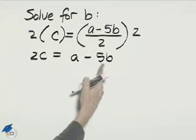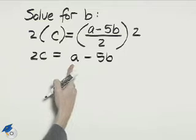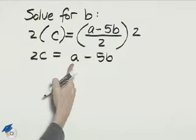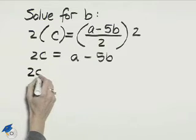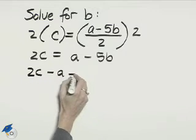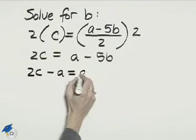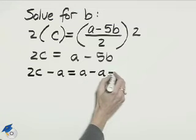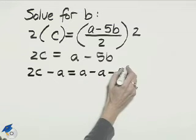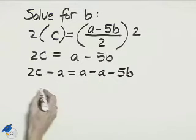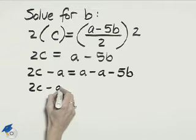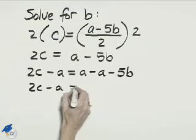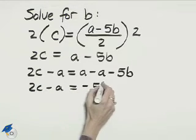If we're solving for b, we need to first move the variable a. We can move that to the other side by subtracting. We'll take 2c and subtract a from this side, and subtract a from the right as well. That way our a will move. This gives us 2c minus a on the left, and negative 5b on the right.